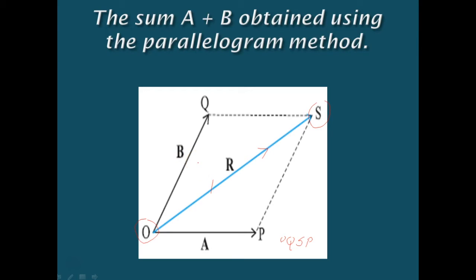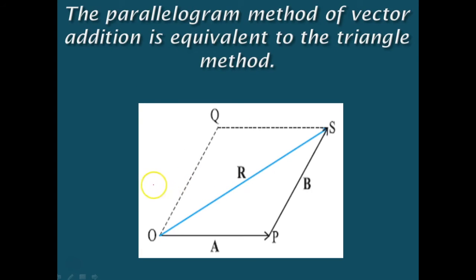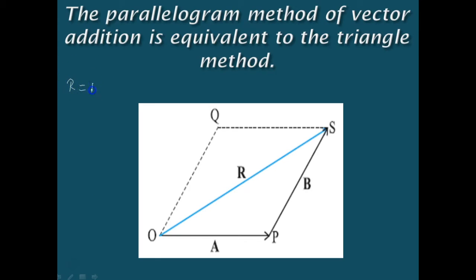The triangle law is used to obtain the resultant of a and b. In this figure, we can see the two vectors a and b are given from the point o and s, and the resultant vector r is the third side of a triangle. Whatever result we get using the triangle law of addition as well as the parallelogram law of addition is r only. So these two methods yield the same result and are therefore equivalent.